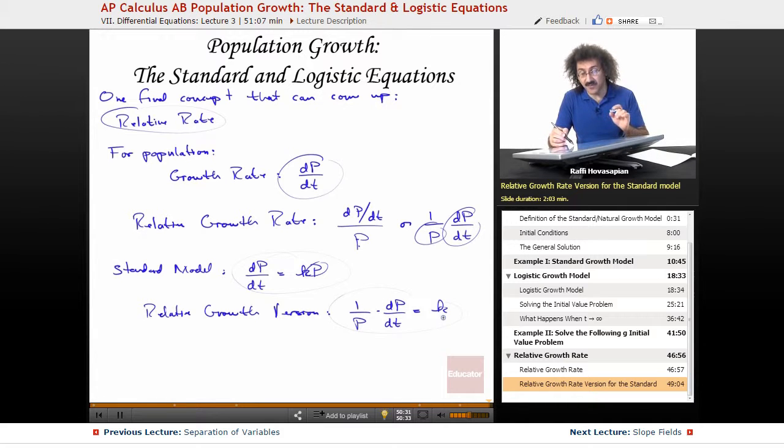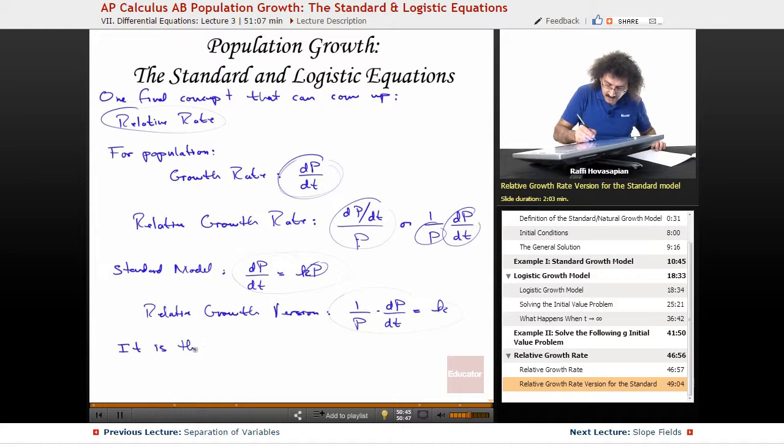So you're going to say the relative rate of change—rate of change divided by the population—is equal to a constant. That's all that's happening here. So growth rate, relative growth rate, just divided by whatever the dependent variable is. So it is the same equation, just worded differently. So you have to be aware of that, just worded differently.